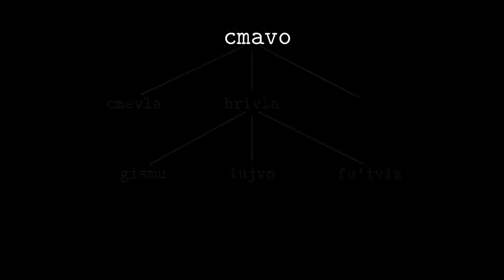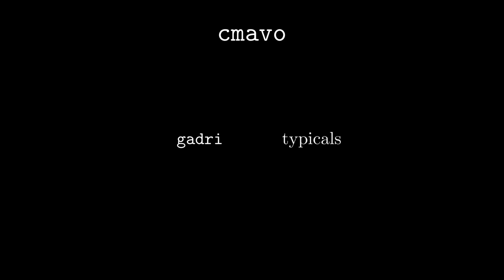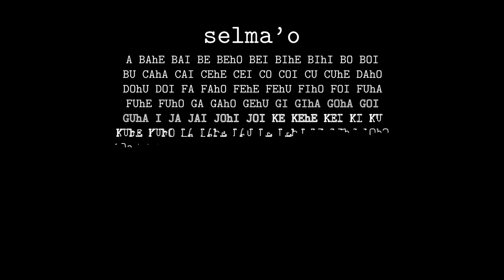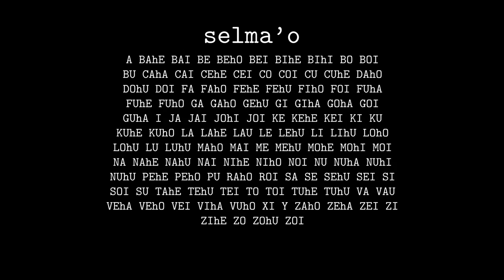Within the shmavo are the gadri, or articles, and the typicals — and those two are what I'm going to talk about in this video. There are online references to the gadri and the typicals in the link in the description. By the way, classes of shmavo are called selmaho, and there are, as far as I can tell, 116 Lojban selmaho.